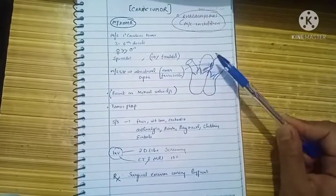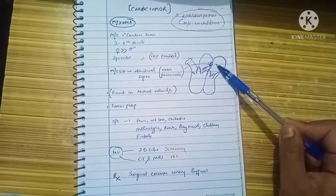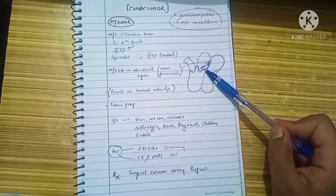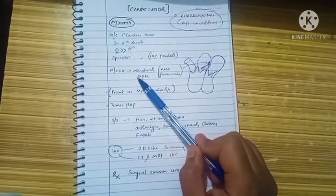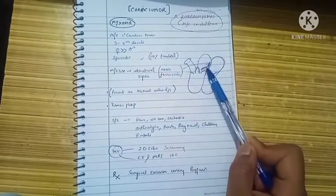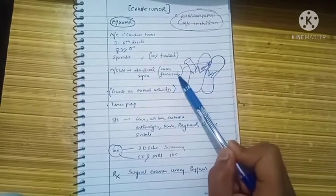The most common site for this myxoma is the interatrial septum. This being the right atria and this being the left atria, this is the interatrial septum where the myxoma is most common, and the site in interatrial septum is near to the fossa ovalis.